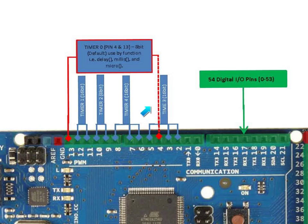Next is Timer 3, having a 16-bit resolution, which utilizes pin 2, pin 3, and pin 5 when configured in the Arduino software. Unlike Timers 0, 1, and 2, Timer 3 is free from any default functions in the Arduino software library.